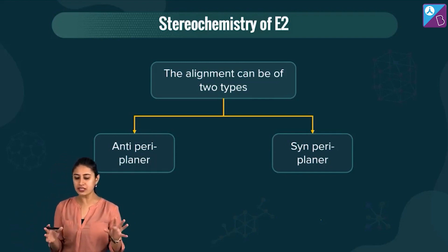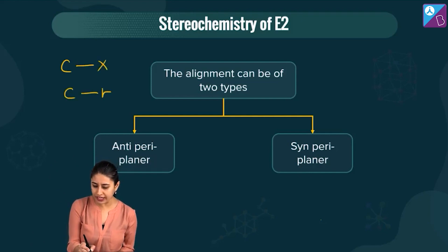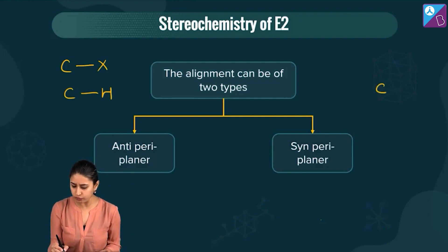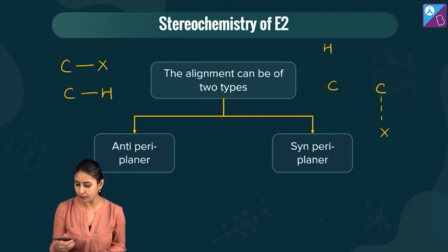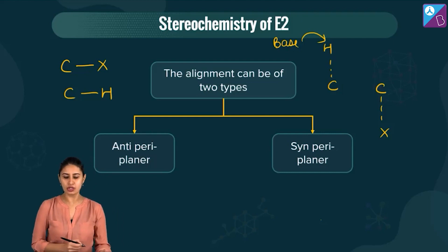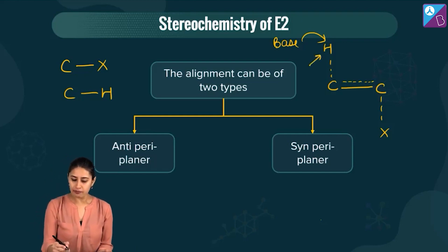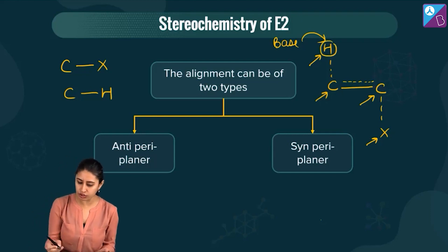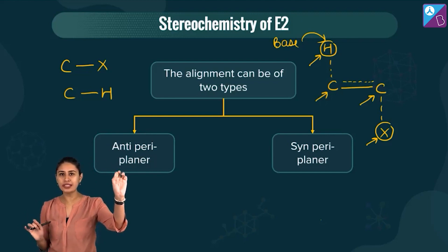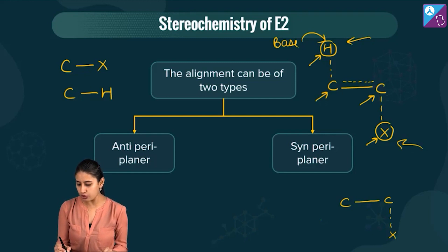When talking about the alignment for the carbon-halogen and carbon-hydrogen bonds to be in one plane — where bond breaking is occurring simultaneously with the base doing its job and partial double bond character building up — there are two ways the hydrogen, the two carbons, and the halogen can be in one plane. One possibility is that the hydrogen and the halogen are anti to each other, opposite each other.